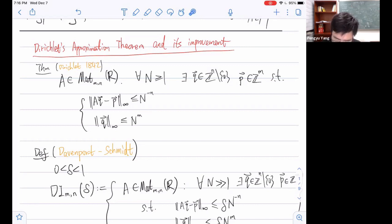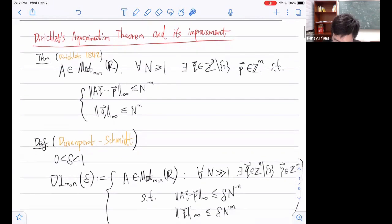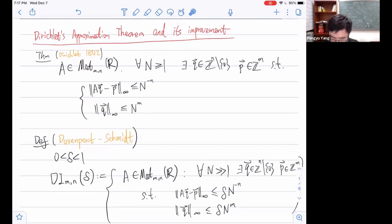This is called the uniform version. The more commonly seen version can be deduced from this one. In other words, we can view A as a collection of linear forms on R^M. So each row vector is a linear form, you have n of those. You evaluate these linear forms at Q, and each of those is simultaneously close to an integer. One can prove this using the pigeonhole principle, this was Dirichlet's original proof.